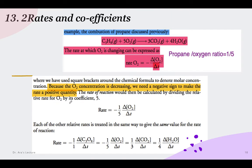The rate of reaction can be calculated by dividing the relative rate for oxygen or any other reagent or product by its coefficient. So for oxygen we divide by 5, since 5 mol of oxygen reacts with 1 mol of propane. For reactants we use a negative sign, and for products a positive sign since they are forming.